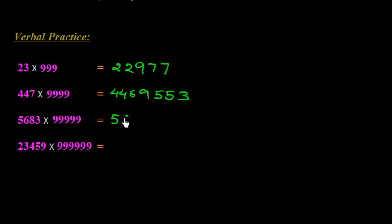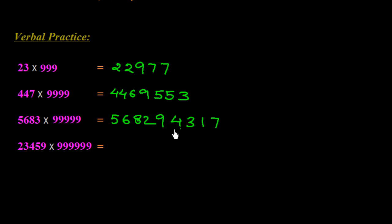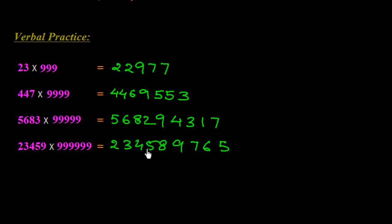For example, if there is 1 more nine than the digits in the given number, put one 9 in the middle. If there are 2 more 9s, put two 9s in the middle. So the number of 9s placed in the middle equals the difference between the total digits in the series of 9s and the digits in the given number. In this way we can do it verbally, very easily — there is no problem solving these sorts of questions.